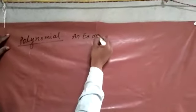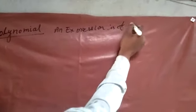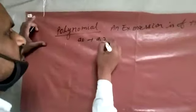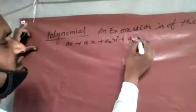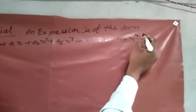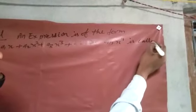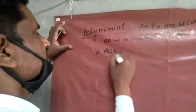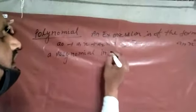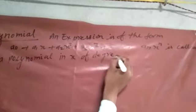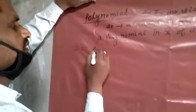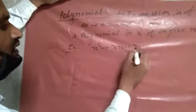An expression of the form a0 plus a1x plus a2x squared plus a3x cubed plus dot dot dot anx power n is called a polynomial in x of degree n. Examples: x squared plus 3x plus 2, or x cubed plus 2x plus 7, or 5x.